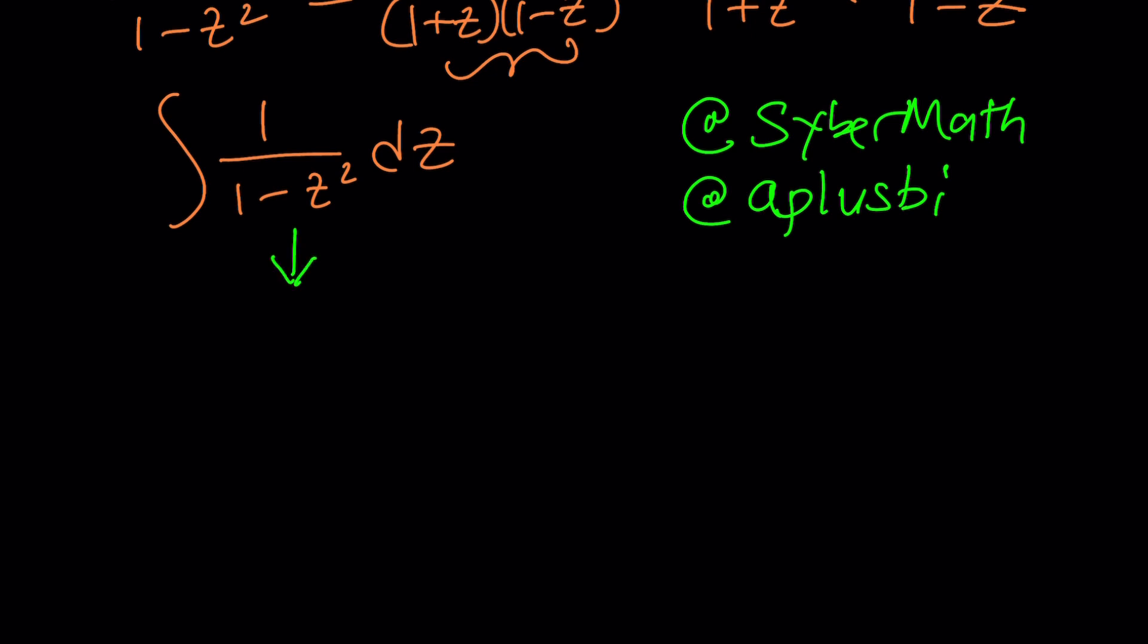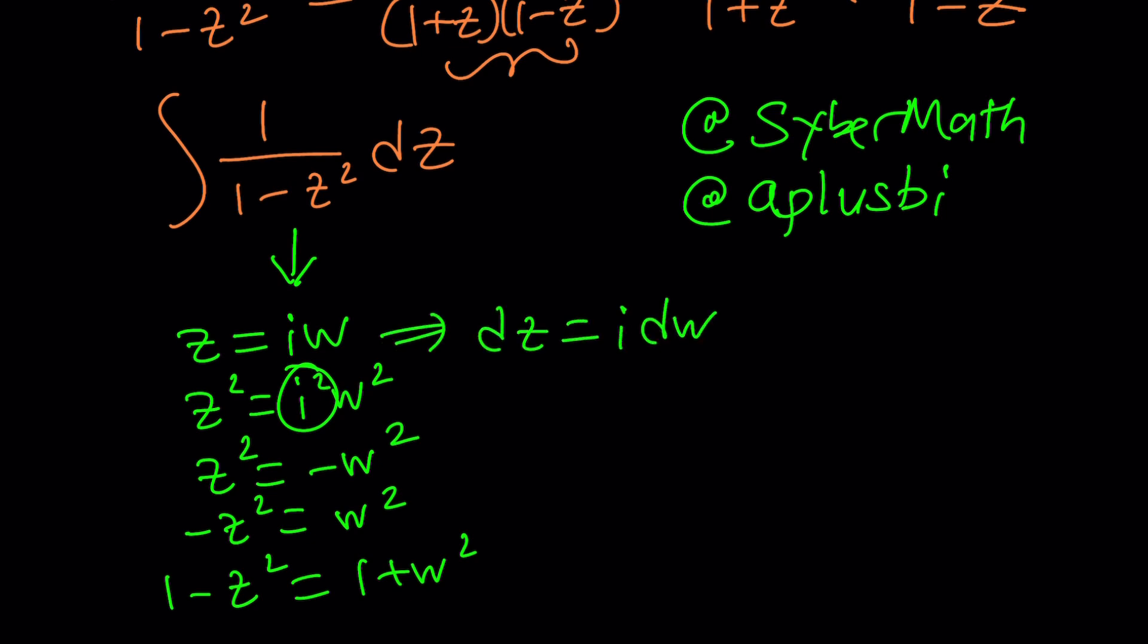Now in this problem here's what I'm going to do. I'm going to replace z with iw because when I do that and square z I get i squared w squared and i squared is negative 1, so z squared becomes negative w squared and 1 minus z squared becomes 1 plus w squared. And dz just becomes dw because i is a constant.